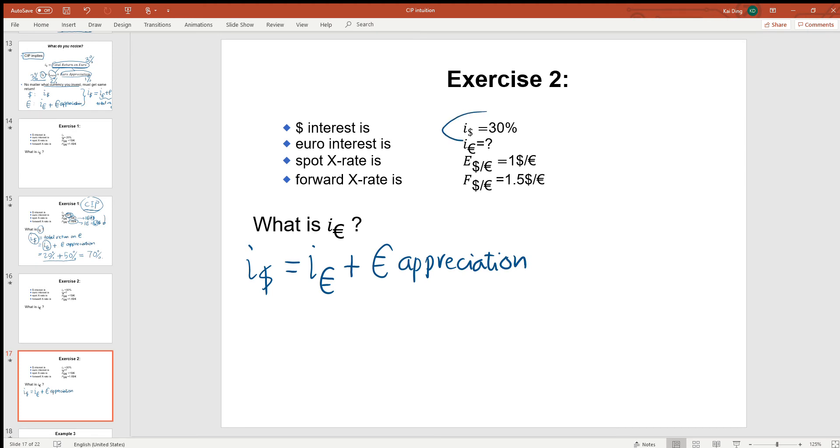Here we know I$ is equal to 30%. We don't know what IEUR is, the interest on EUR. We know the current exchange rate is 1 EUR equal to $1, and the future exchange rate is 1 EUR equal to $1.5.